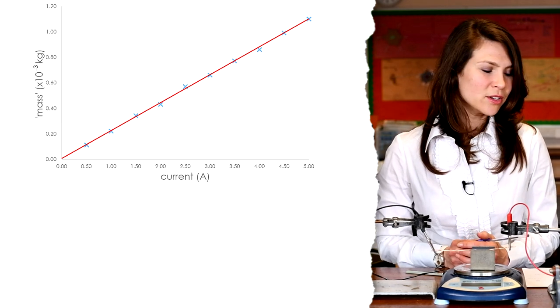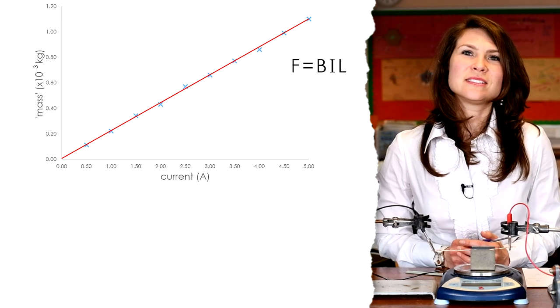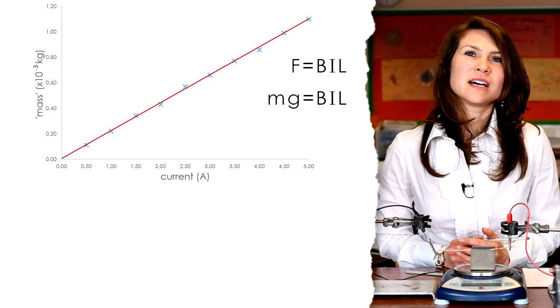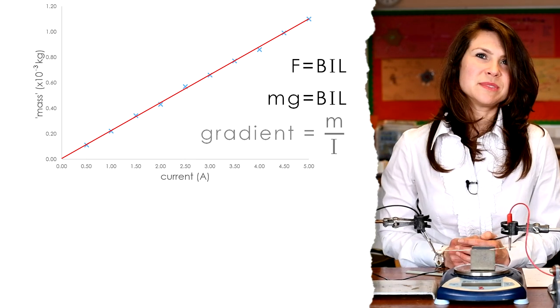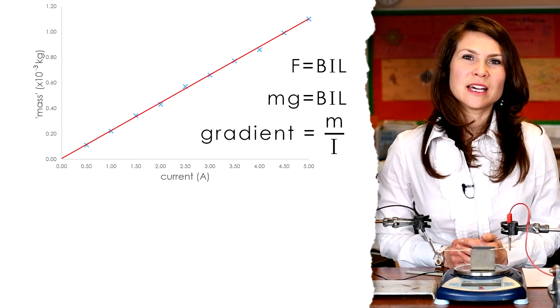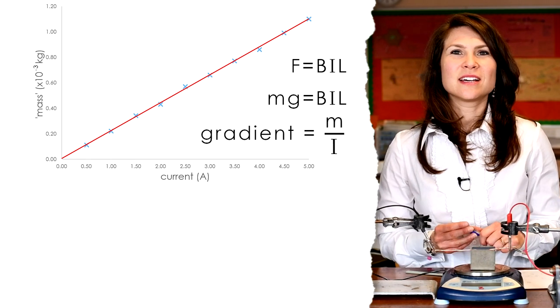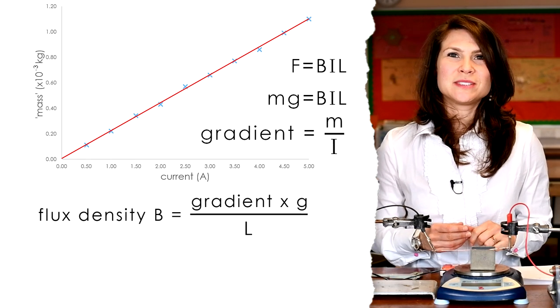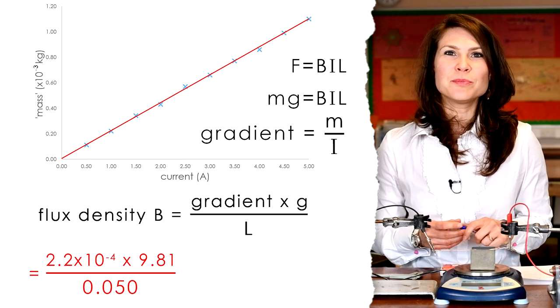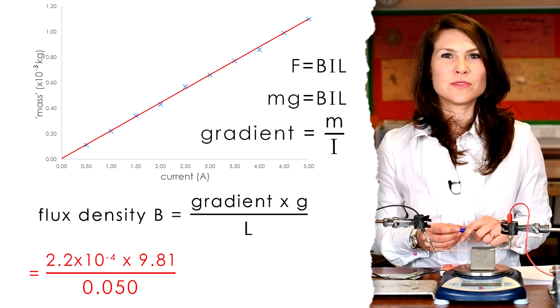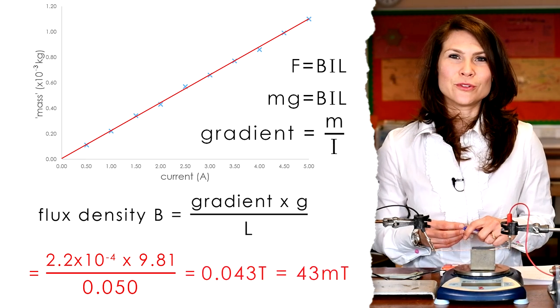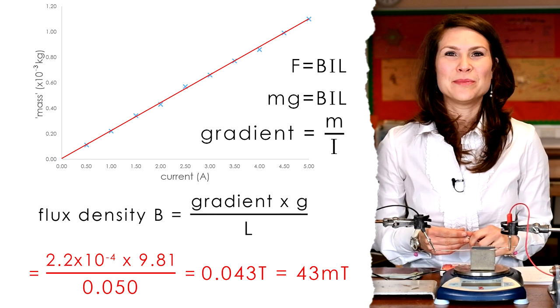So if we then take our equation F equals B times I times L, of course we're looking at mg equals B times I times L. So if we take our gradient as m divided by I, that is equal to B times L divided by g. We've calculated our gradient as 2.2 times 10 to the minus 4. We now times this by g, 9.81, and divide by the length of the wire, which was 0.05 meters. And this gives us a value of 0.043 teslas, or 43 milliteslas.